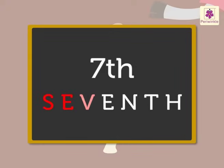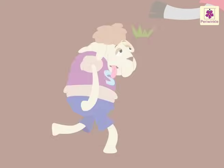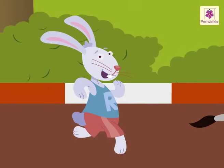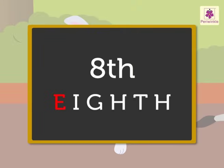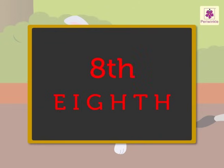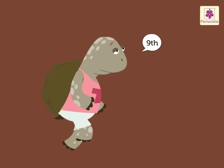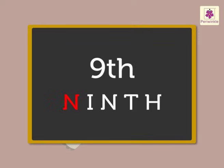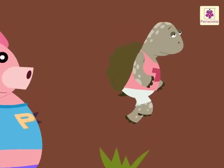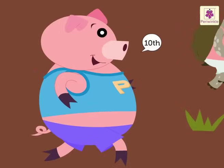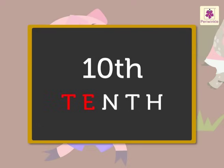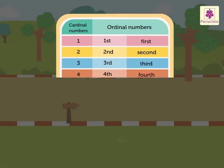The sheep is at the 7th position — S-E-V-E-N-T-H, 7th. The rabbit is at the 8th position — E-I-G-H-T-H, 8th. The tortoise came 9th in the running race — N-I-N-T-H, 9th. The pig is at the 10th position — T-E-N-T-H, 10th. Let us look at this table.